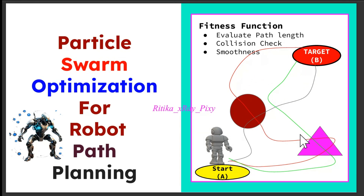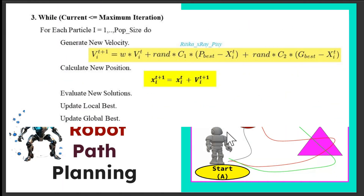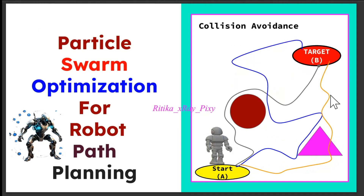We create an objective function that checks: first, path length — whether the path is shorter or not; second, collision — paths that collide with obstacles are penalized; and third, smoothness, like the number of turns. Then we move the particles — in PSO, we update their position based on their personal best (the best known path for that particle) and the global best (the best path found by the entire swarm). This movement guides exploration of new areas and refinement of good paths.